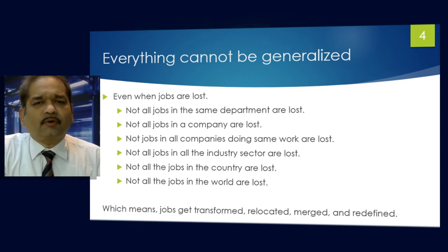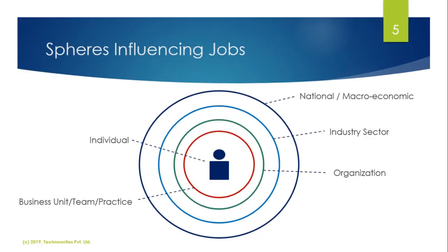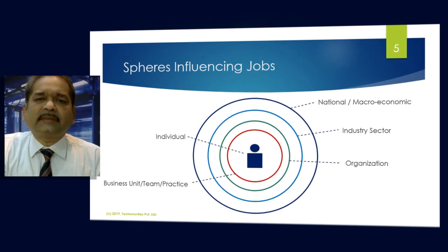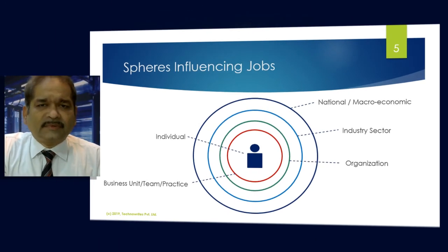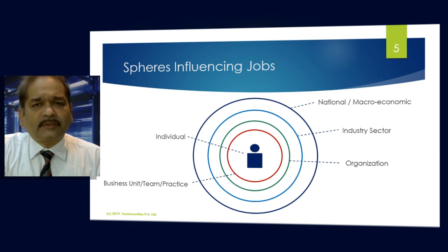This also tells you that there could be more than one influencing factor on a job loss. The spheres that influence jobs include factors at the national or macroeconomic level, factors at the industry sector level, factors at the organizational level, factors at the business unit, team or practice level, and of course factors at the individual level. In order to accommodate the effects of all these different factors at different levels, I have built a mathematical model which could be useful.